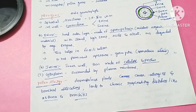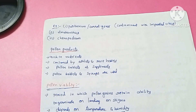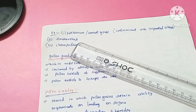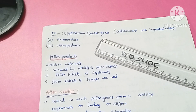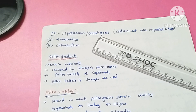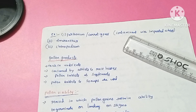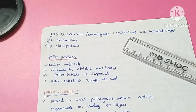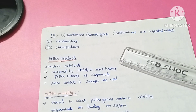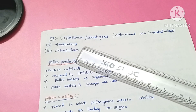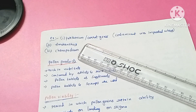Asthma causes breathing problems, and bronchitis involves inflammation of the mucous membranes in the bronchial tubes. Examples of pollen allergy-causing plants include Parthenium, which is commonly called carrot grass. This plant came to India as a contaminant while importing wheat. The other examples are Amaranthus and Chenopodium.